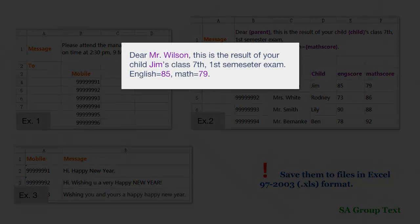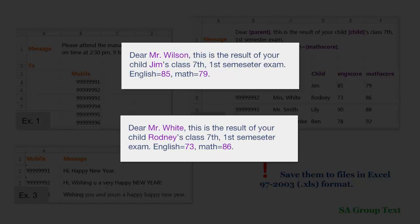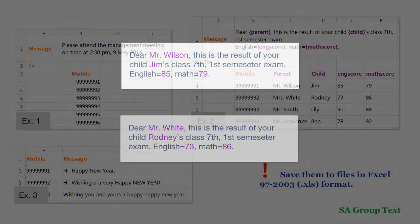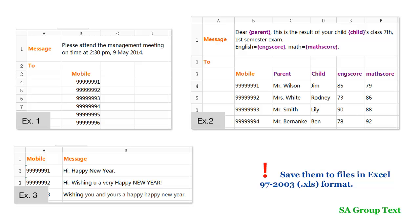So this will give the first recipient a message like this, and the second recipient a message like this. Now the third sample applies to the case where the message is completely different for everyone. The file structure is straightforward and easy to understand. Our import files are now ready.